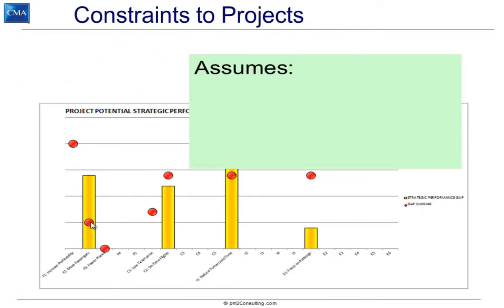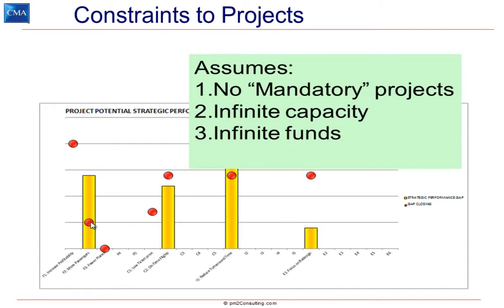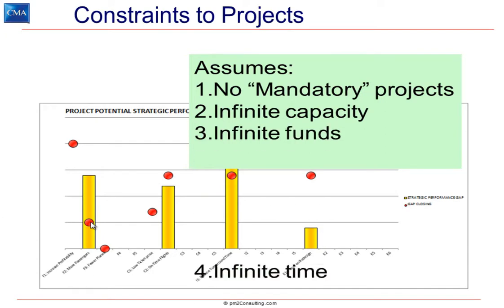What we need is a way to get past these assumptions — assumptions like there are no mandatory projects. In fact, some projects you have to do for regulatory or legislative reasons, or because they've been mandated by head office. Of course, we don't have infinite capacity in the organization to both do our day job and these projects, nor do we have infinite funds or infinite time in which these projects can get done. So how do we optimize against those equations?